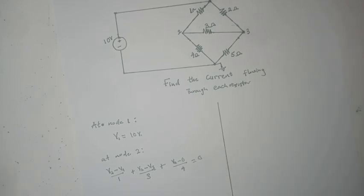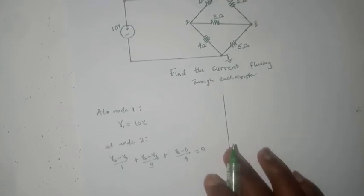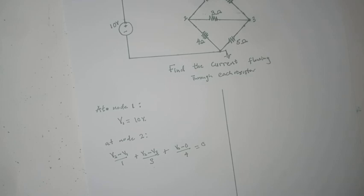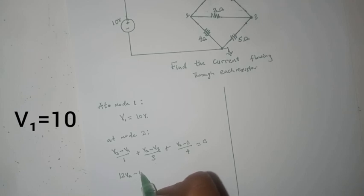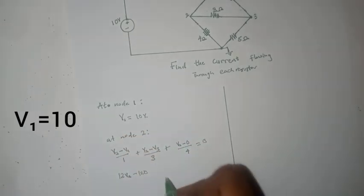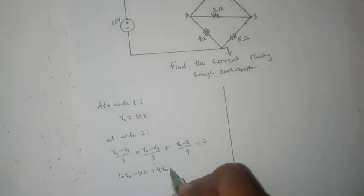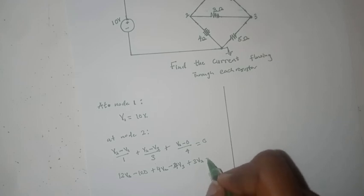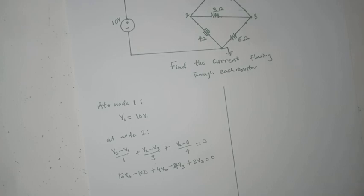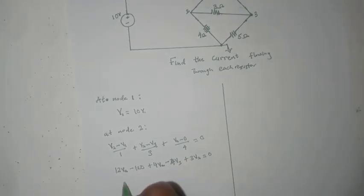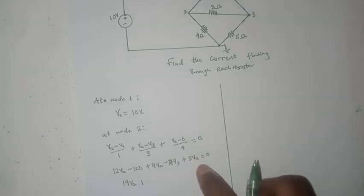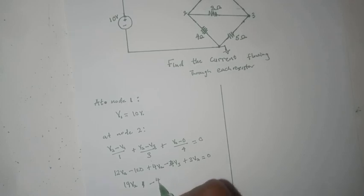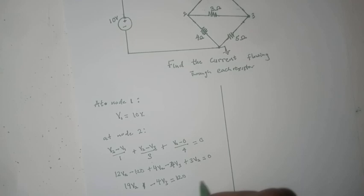Everything equals 0. So say we multiply through by 12, then we'd have 12V2 minus 120 (recall that V1 equals 10), plus 4V2 minus 4V3, plus 3V2 equals 0. We can further say that 19V2 minus 4V3 equals 120, and we can call this our first equation.